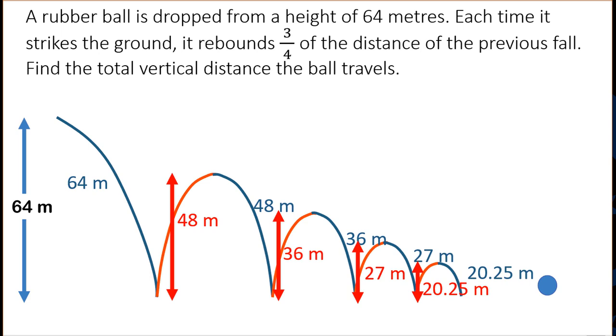And that vertical motion can be thought of as existing in the form of a geometric sequence where A is 48 and R is still three-quarters.